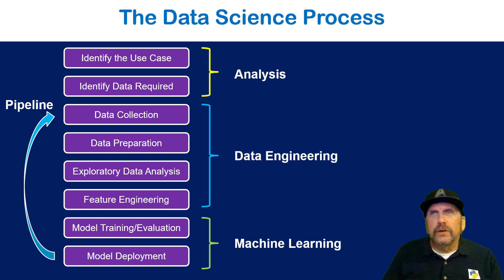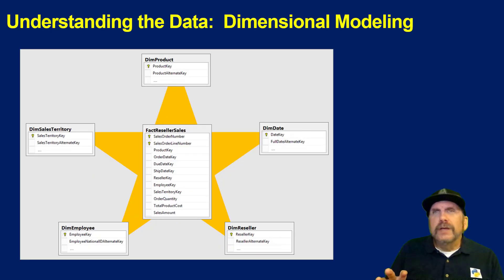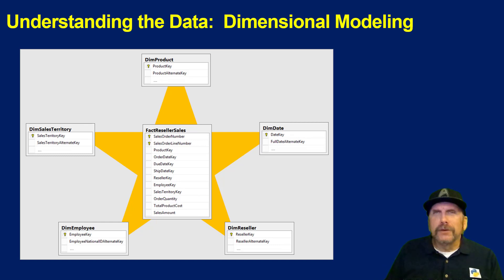And then finally, you train your models and get the model you want to use, and then you deploy that somewhere where it can be used by your service. So that's sort of the overall steps of the data science process. This is kind of an overview.